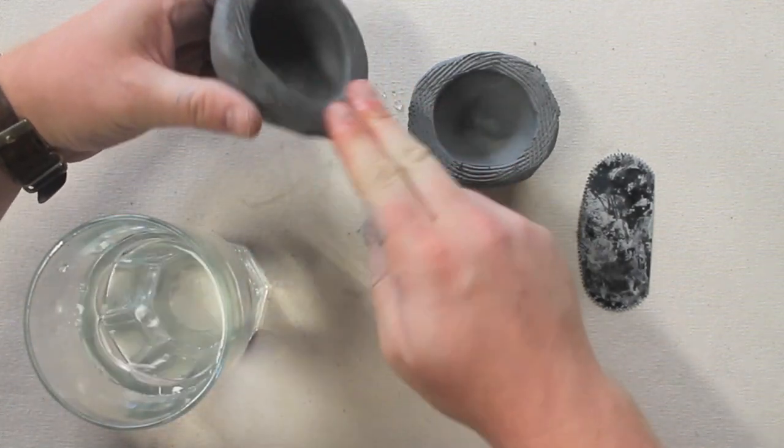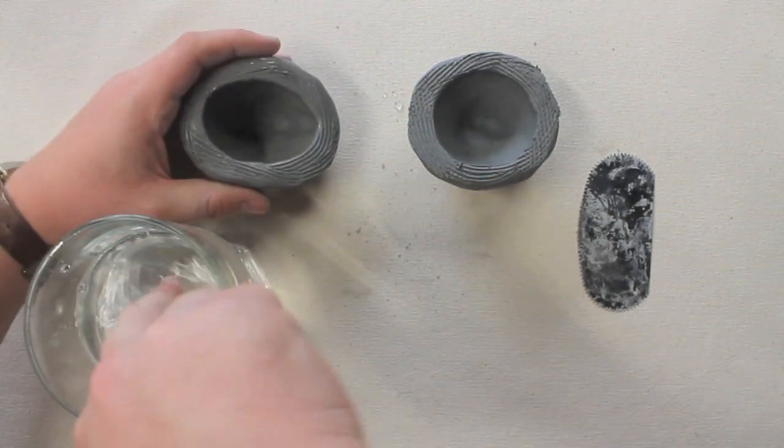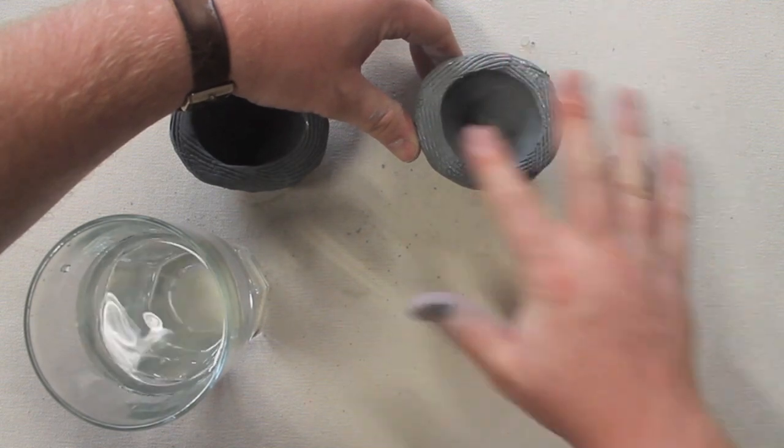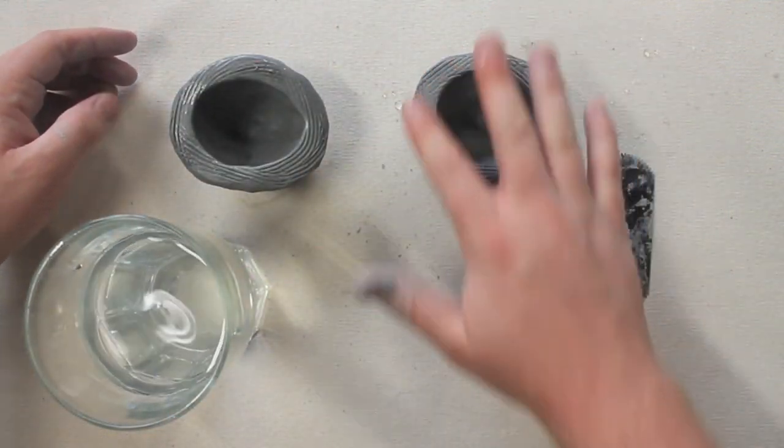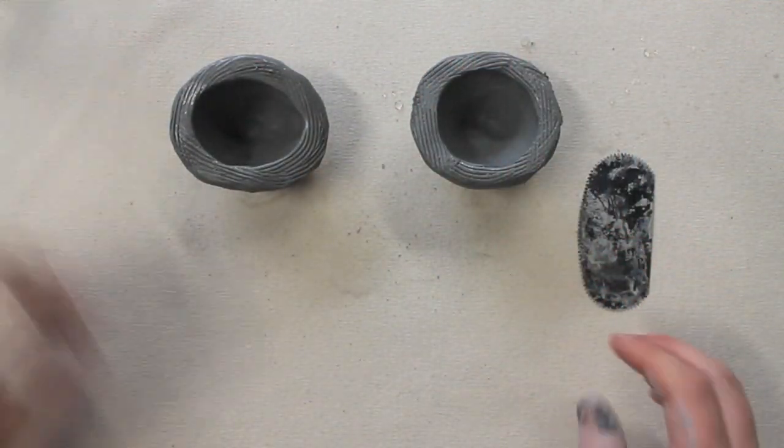Using water, I'm going to create the slip, completing the score and slip cycle. This allows the two pieces to seal the air inside and support it as a sphere.